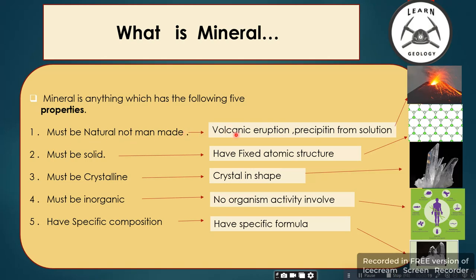Natural means formed by processes like volcanic eruption, precipitation from solution, or tectonic activities. The second property is it must be solid. The third is it must have an atomic structure that is crystalline — crystal in shape.